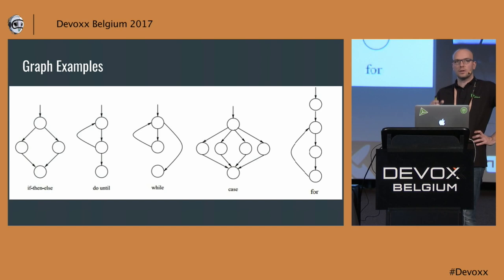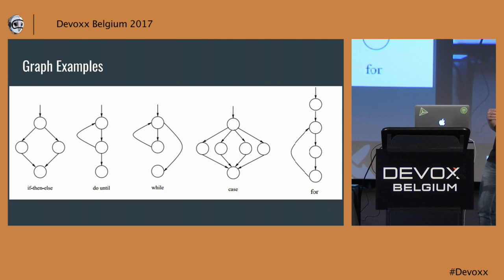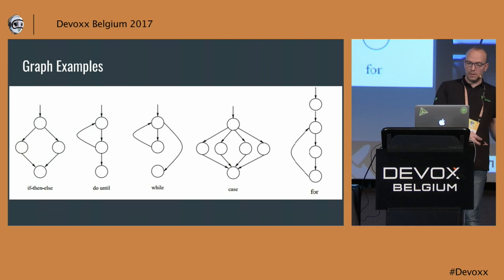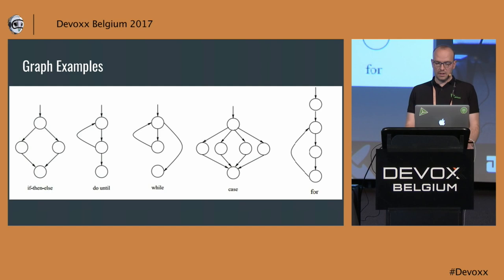How does such a graph look? Every statement in your code is a little circle — a node — and you connect those nodes with each other. Complexity increases whenever you do some kind of branching. If you do an if and else, the if is one side and the else is the other, and in the end they join up again. There are multiple ways to create branches — the switch statement is one example that creates a lot of complexity if you have multiple cases in your code.